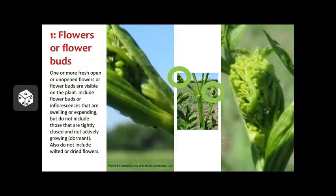Looking at the image on the right, although flowers are yet to open up on this plant, it would still be considered to be a part of the flowers or flower buds phenophase, due to the fact that the flower bud shown is clearly actively growing and expanding. The presence of any structure that will eventually turn into a flower means that the flowers or flower buds phenophase is occurring.